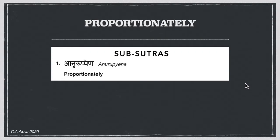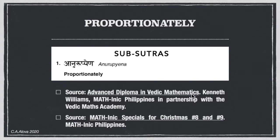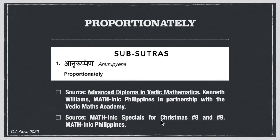My sources for this talk: first is the Advanced Diploma in Vedic Mathematics, offered through Mathenic Philippines in partnership with Vedic Maths Academy, with Professor Kenneth Williams. Also, the Mathenic Specials for Christmas, MSC numbers 8 and 9. You can follow Mathenic Philippines on Facebook, where Sir Ike is offering MSC up to number 30 or so.